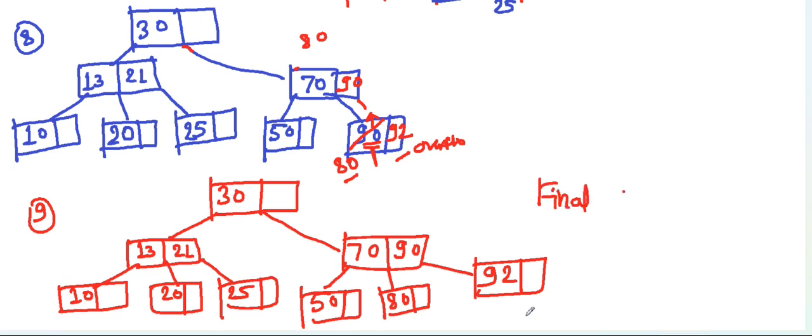This is the final figure for inserting these numbers in a B-Tree of order 3. Keep in mind that a number which is greater should always be added to the right side. Hope you understood this topic. Thank you.